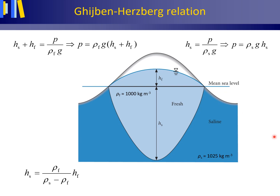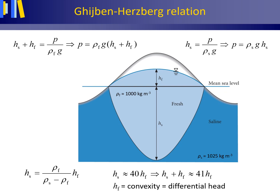This relation is known as the Ghyben-Herzberg relation, after Dutch engineer officer Ghyben and German engineer Herzberg. Taking ρF equal to 1000 kg per cubic meter and ρS as 1025 kg per cubic meter, the equation reduces so that the total thickness or depth of the freshwater aquifer under hydrostatic equilibrium conditions — HS plus HF — equals approximately 41 times the convexity or differential head HF.